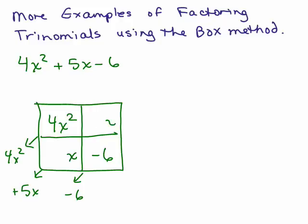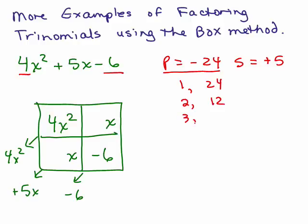So we know that the variable part is x. Well, I need to make sure that the product of those two coefficients is the same as the product of the first and last term here. So I want the product to be negative 24 and the sum of the coefficients has to be positive 5. So we list those as usual, numbers that multiply out to be 24. 1 and 24, 2 times 12, 3 times 8, and 4 times 6.